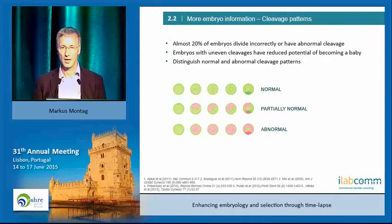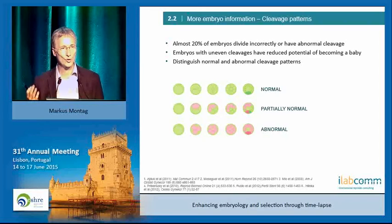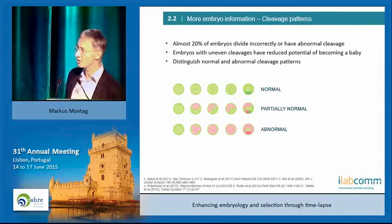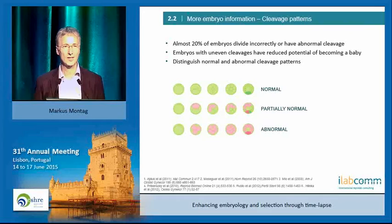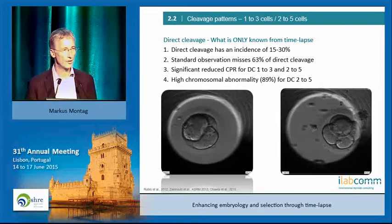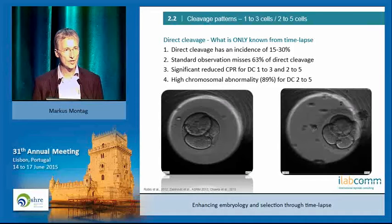Cleavage patterns — extremely interesting. Abnormal cleavage patterns were first defined with time-lapse. We now have the concept of direct cleavage. We never talked about it before because we never saw it — that embryos can cleave directly. It can occur at different stages of development, giving completely different patterns at the end. You can end up with a blastocyst where some or all cells derive from an abnormal cleavage event. An example is direct cleavage 1-to-3, which seems to have a pretty high incidence. You will not see it without time-lapse.